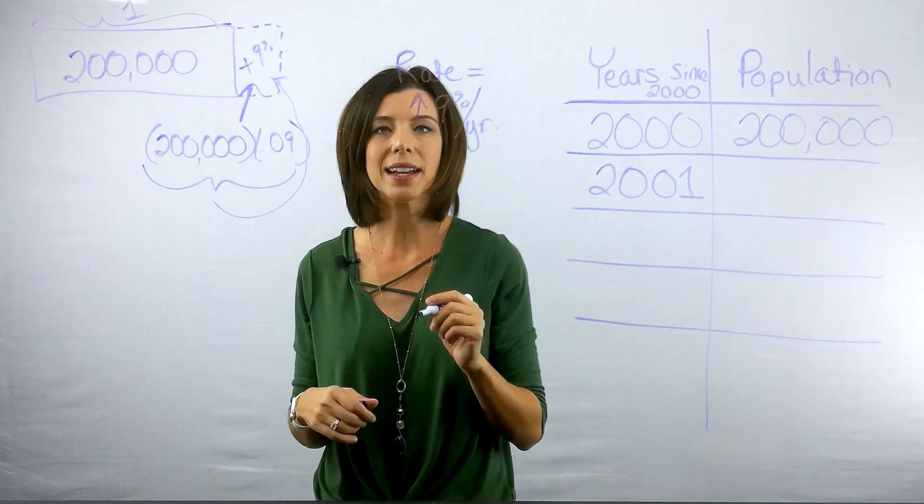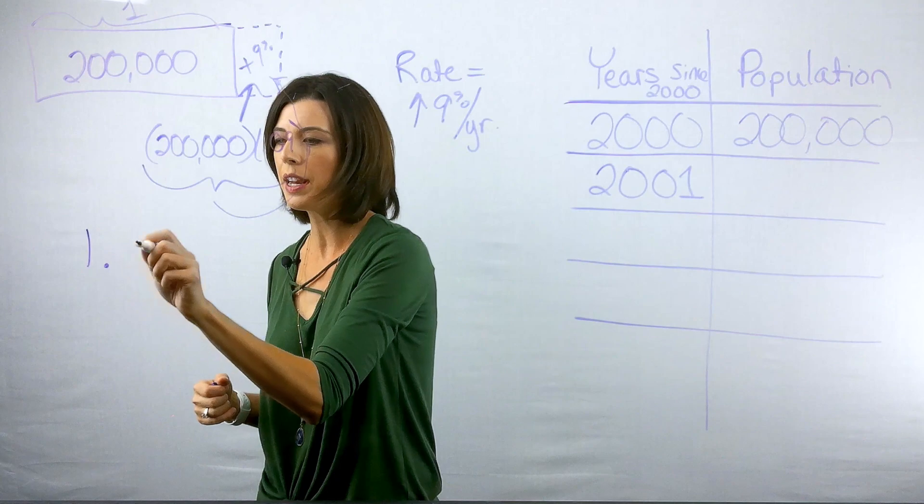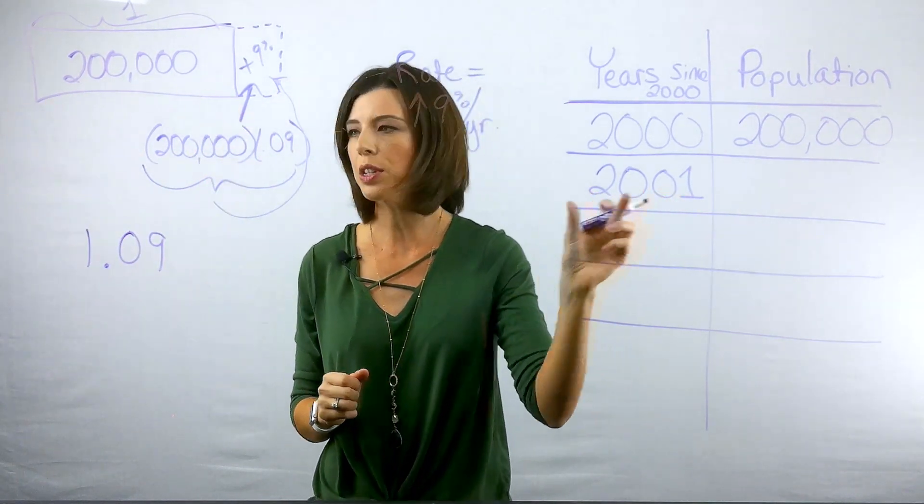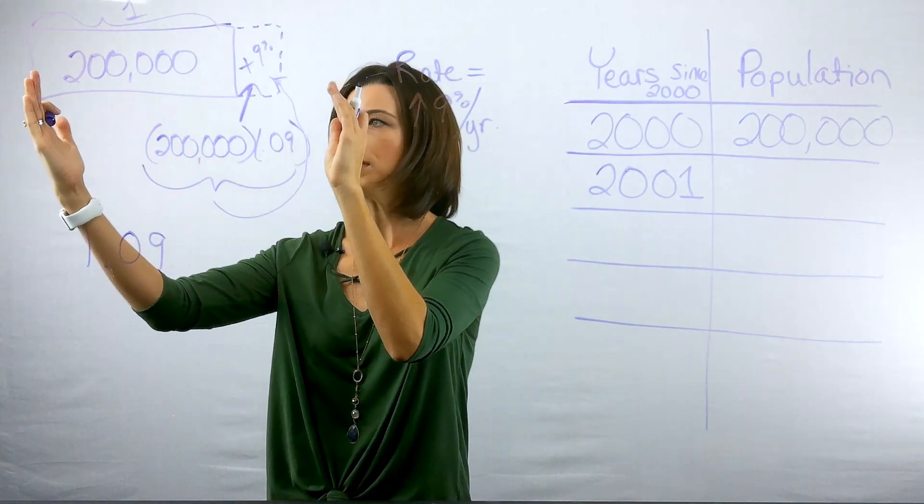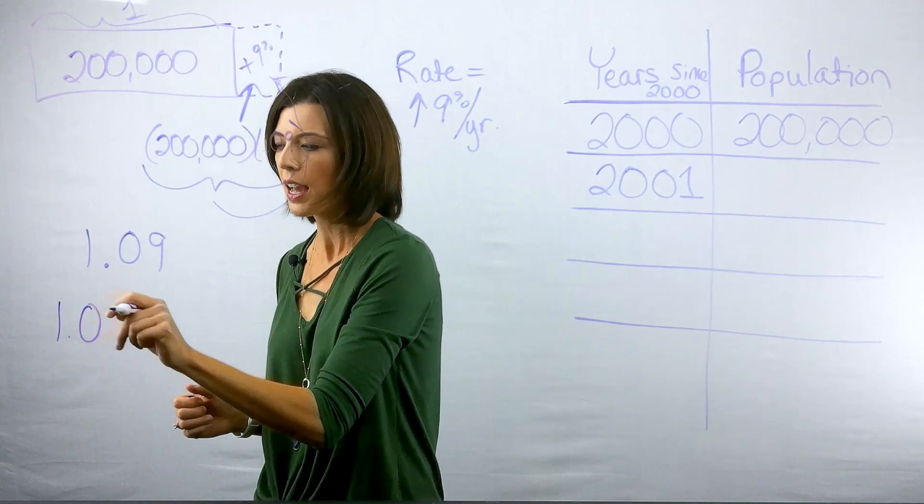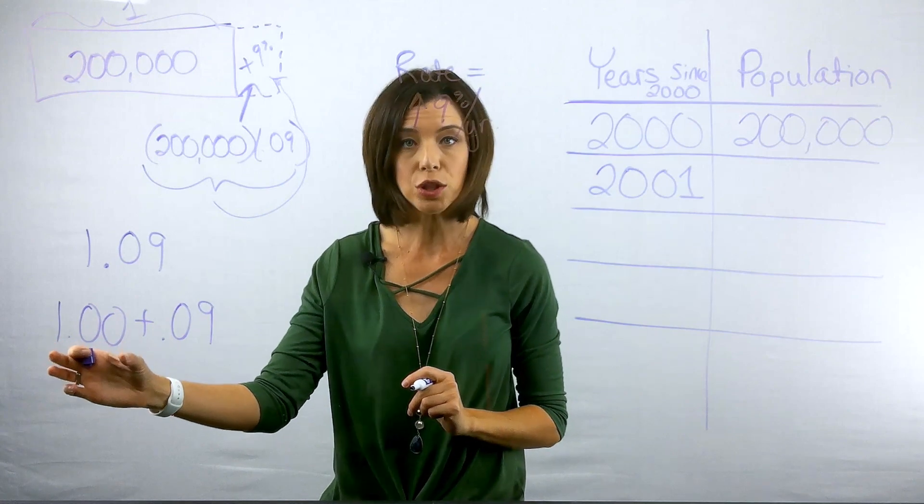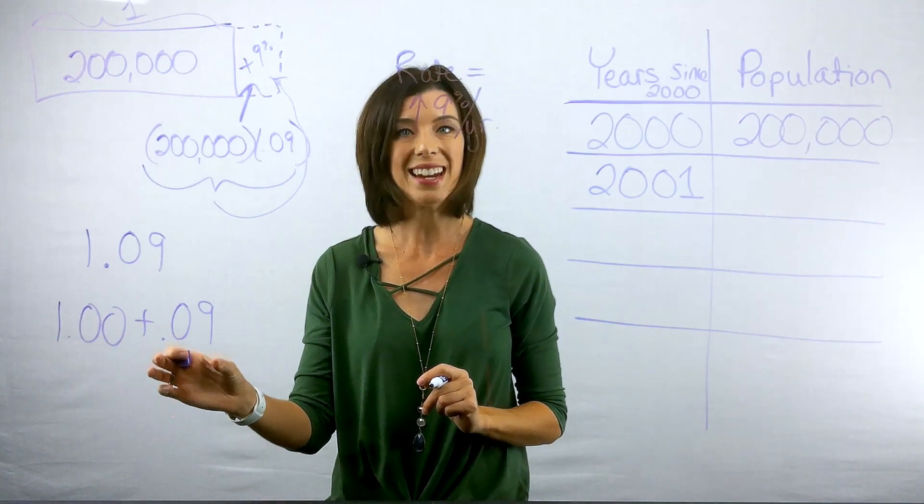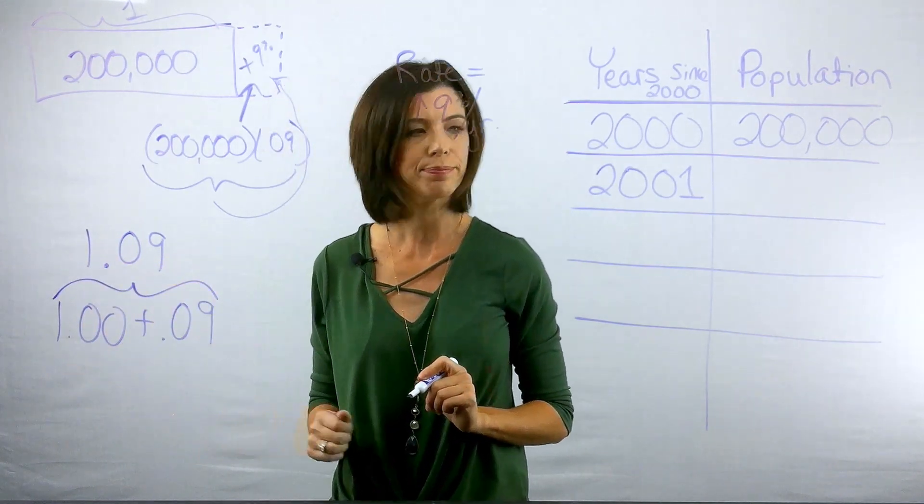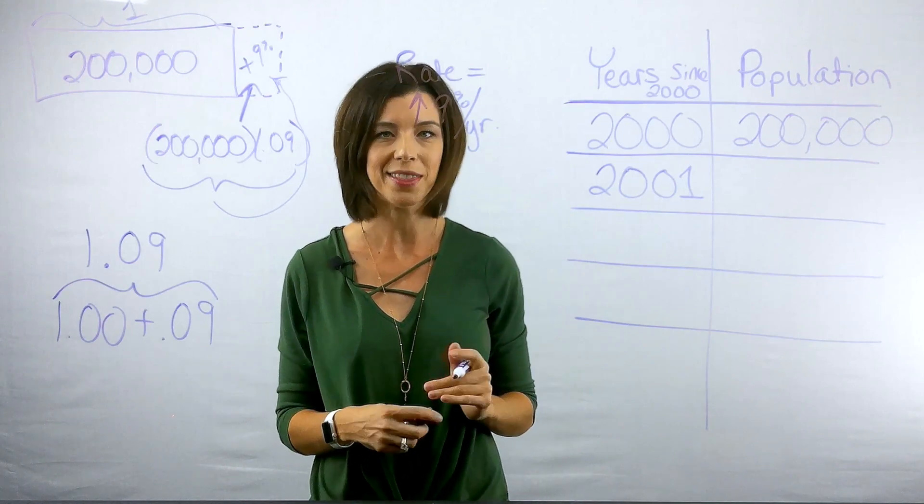And that would be that I would multiply it times 1.09. Now the reason for the one is because we're literally accounting for this whole. So we're saying that in 2001, I have this whole plus that 9%. And literally what I can think of this as, I have one whole plus the 0.09. So I'm going to get a copy of 200,000 plus that 9% of 200,000. And that's how I get this 1.09. So instead of solving it out right now, I'm just going to write down what's actually happening in the equation.